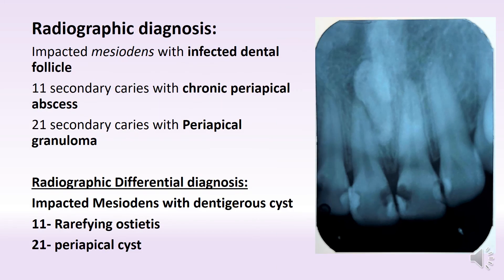So that leads us to the diagnosis. You have an impacted tooth with an infected dental follicle. And you have a 1-1 which is having secondary caries and a chronic periapical abscess. You have 2-1 which is having secondary caries with a periapical granuloma.